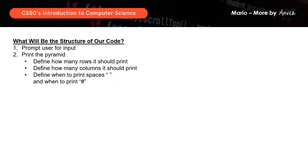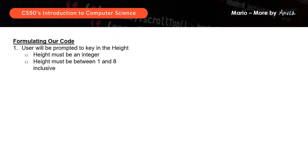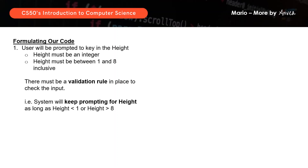Let's work on the first part first, which is to prompt the user for an input. The user will be prompted to key in an integer that is between 1 and 8 inclusive. This means that there must be a validation rule — a check in place to verify that the input is accepted. The system should keep on asking the user for the height as long as the height keyed in is less than 1 or more than 8. To do this, we can use the do-while loop. We'll use N to represent height.